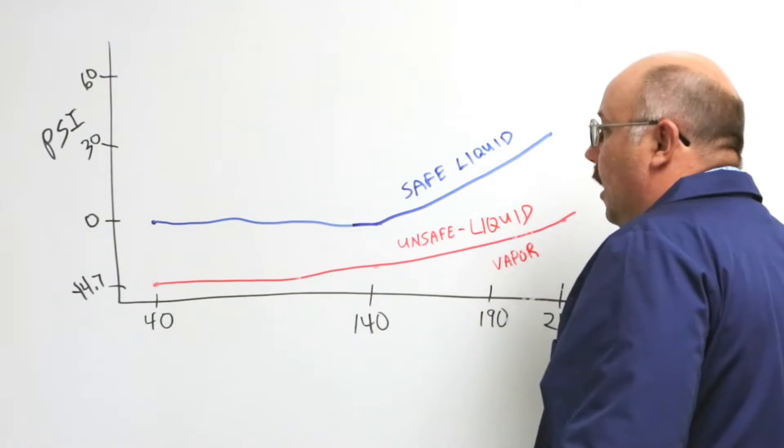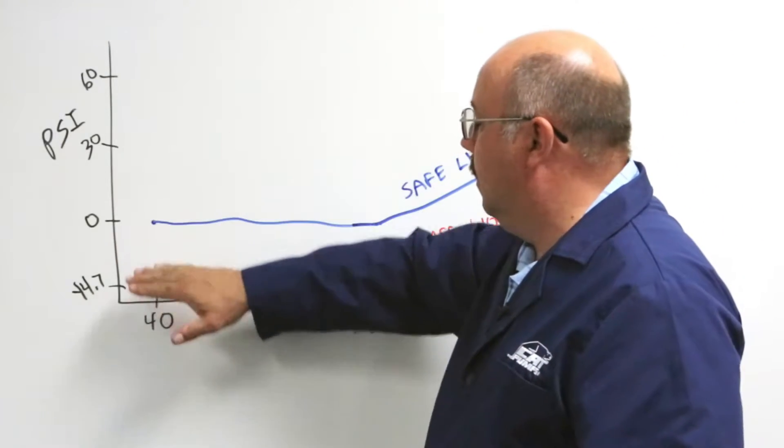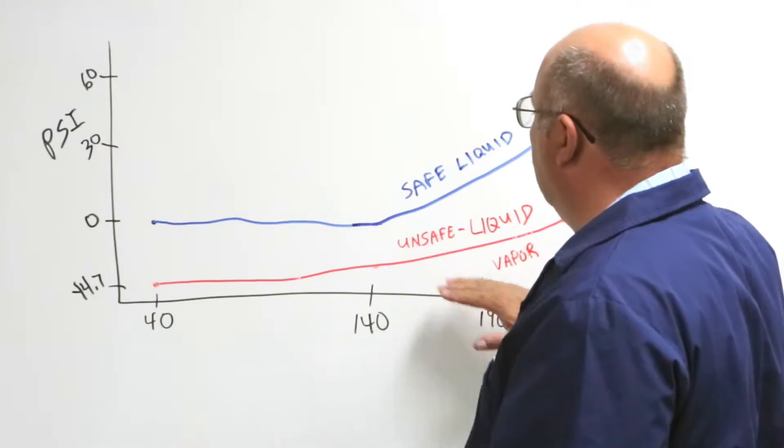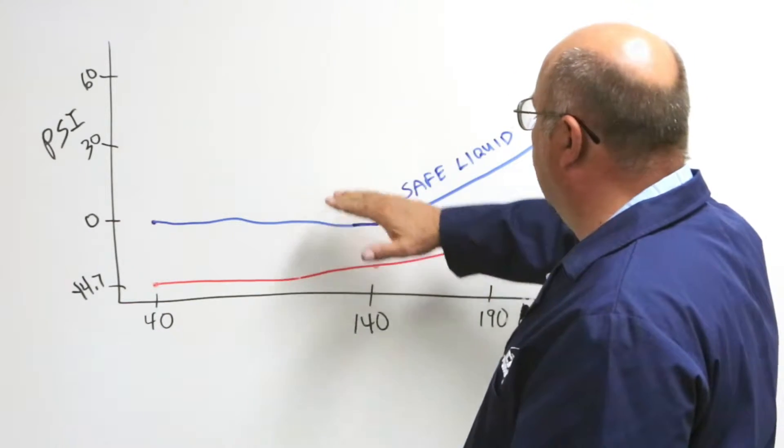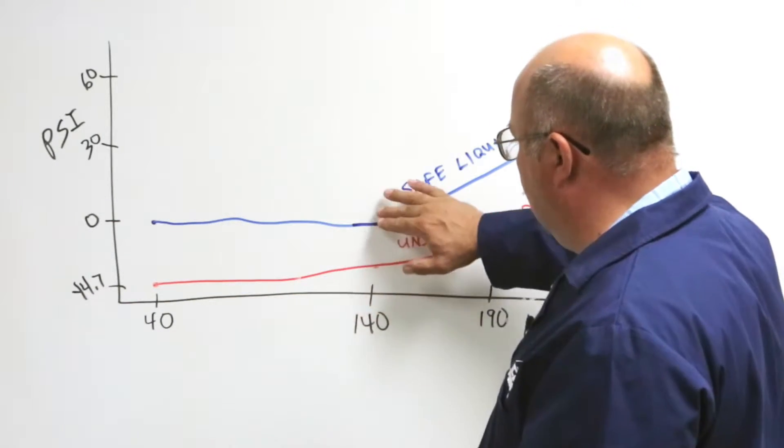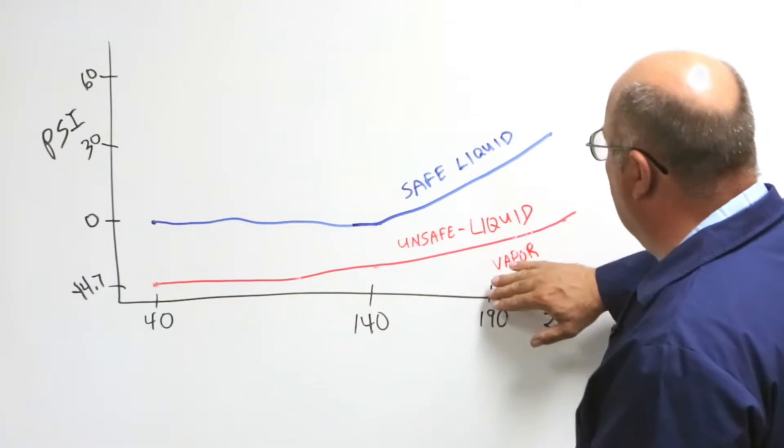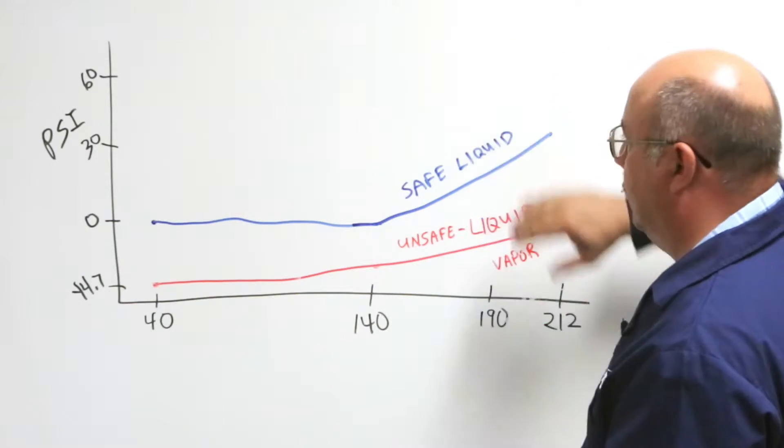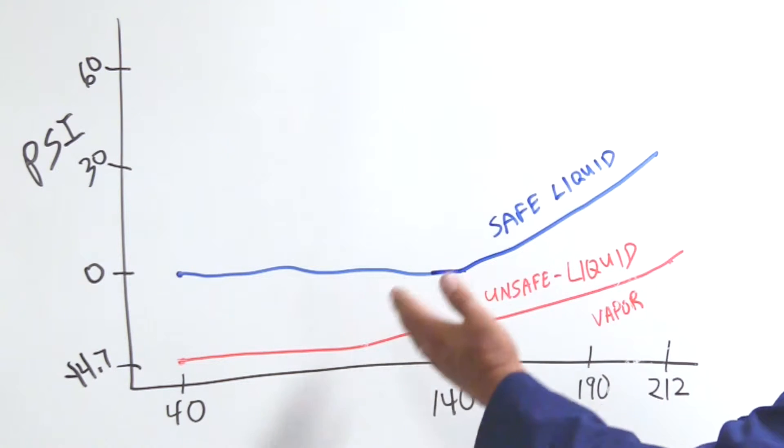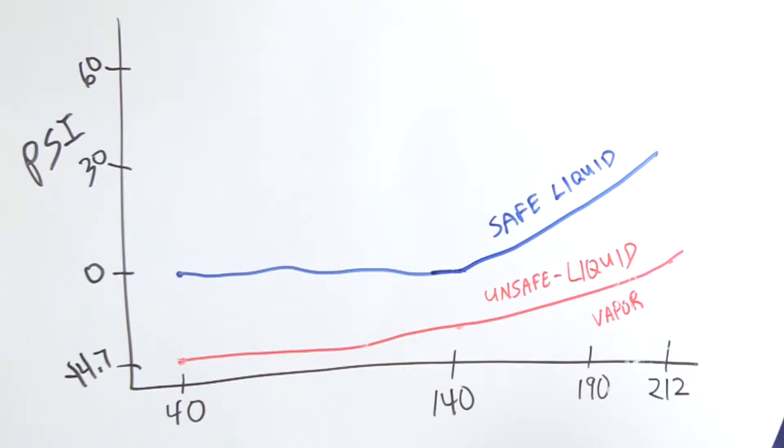So this is how you use pressure and temperature to determine where you want your pump to be. So if you're at 140 you can be anywhere here or above. At 190 you want to be up here or above. And the other things that factor into this equation is seal selection.